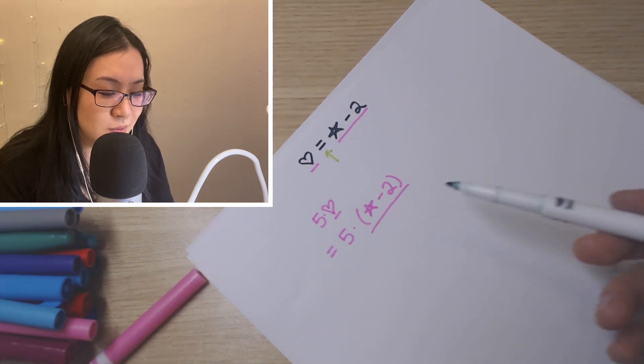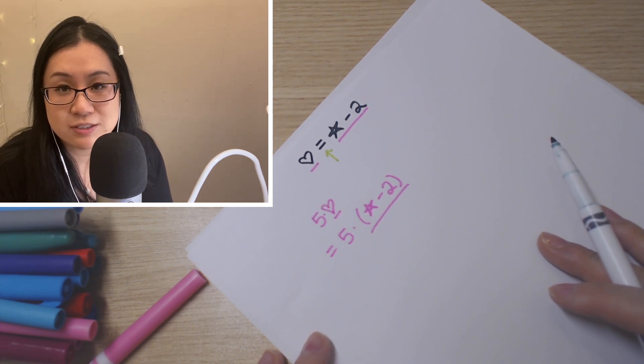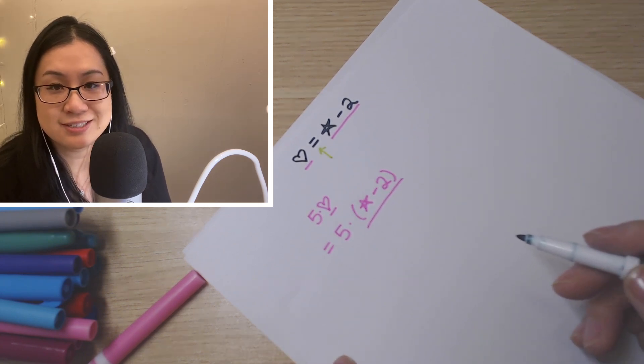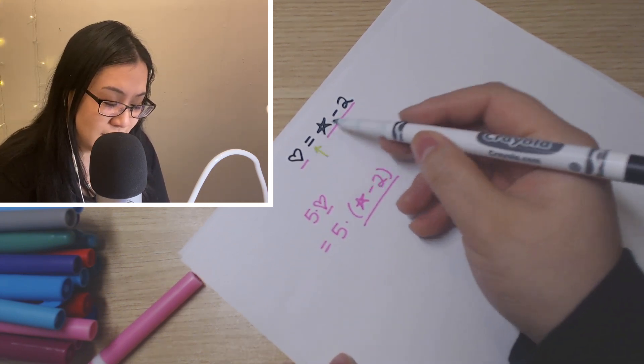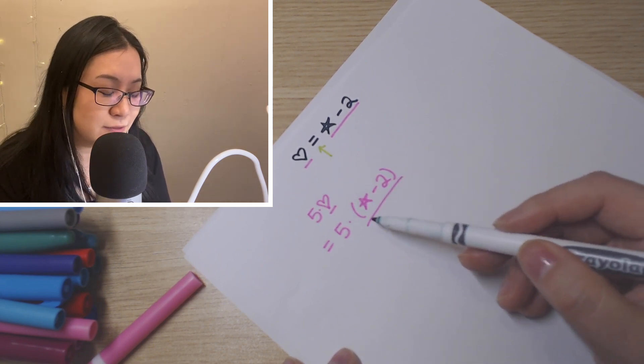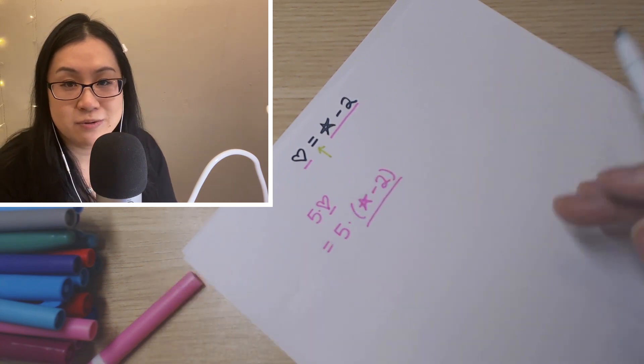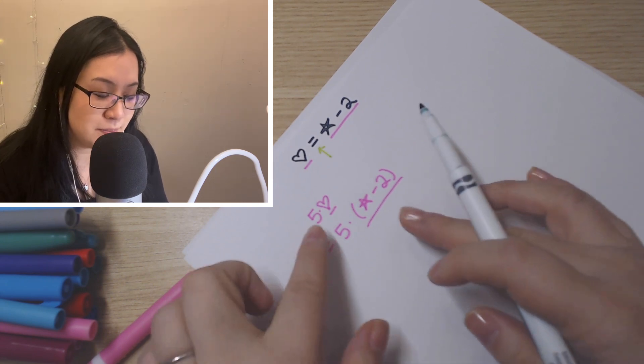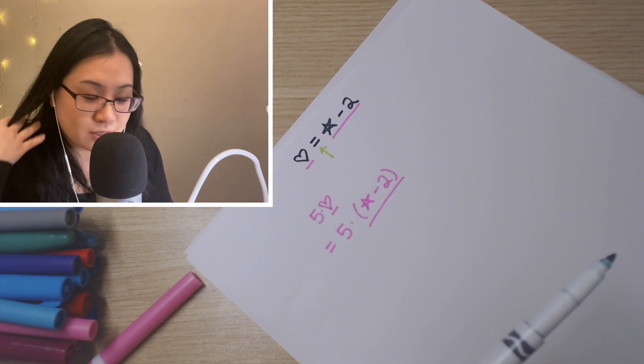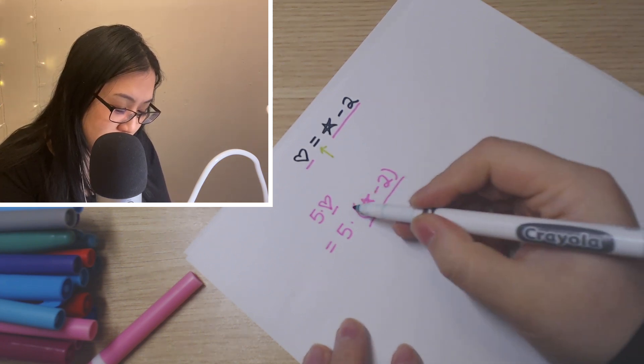That means that if I have, say, five heart, in algebra that usually would mean multiplying, right, five times heart or something, you can replace that heart with star minus two. So I could have five times star minus two.